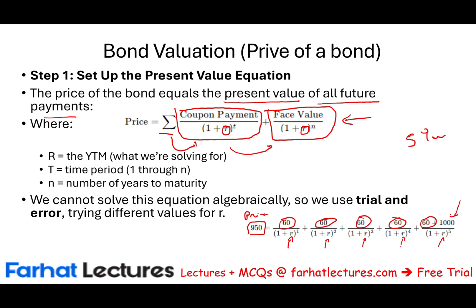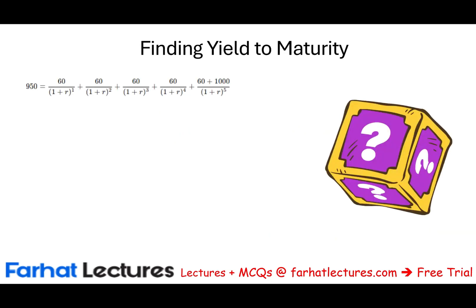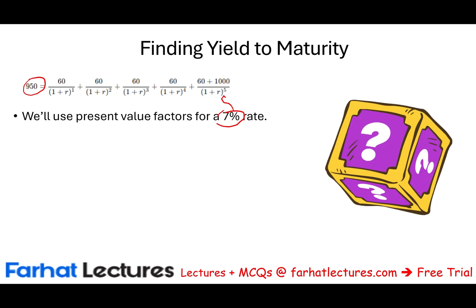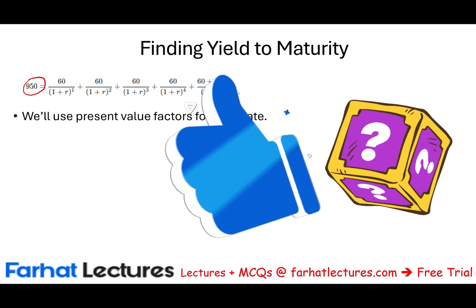What can we do? We could use trial and error — we input a rate of return and see if it equals $950. I'm showing you trial and error because you need to understand the process. An Excel sheet or a finance calculator can do it, but I want you to understand the process. So we use 7%: if 7% gives us $950, then we know we are earning 7% on this bond. Using 7% to discount the annuity, the $60 at five periods at 7%, the factor is 4.1002. To discount the $1,000 at five years at 7%, the factor is 0.7130.